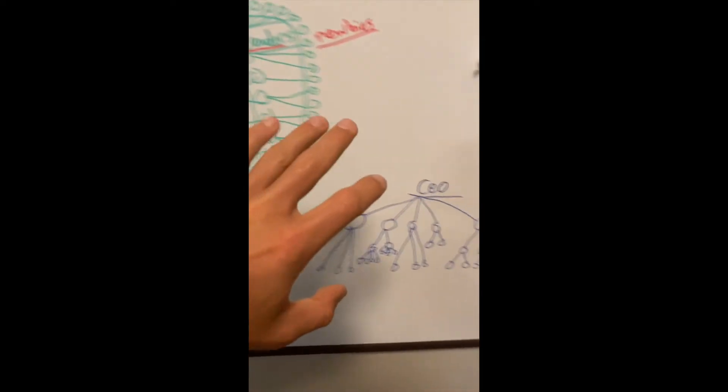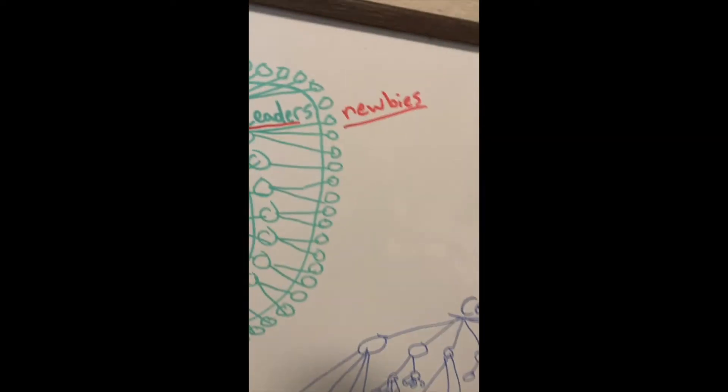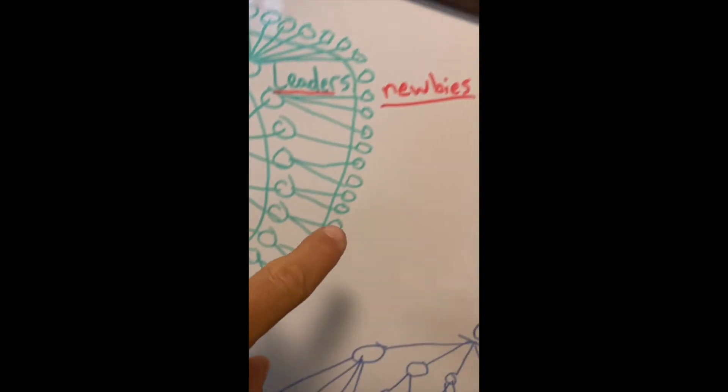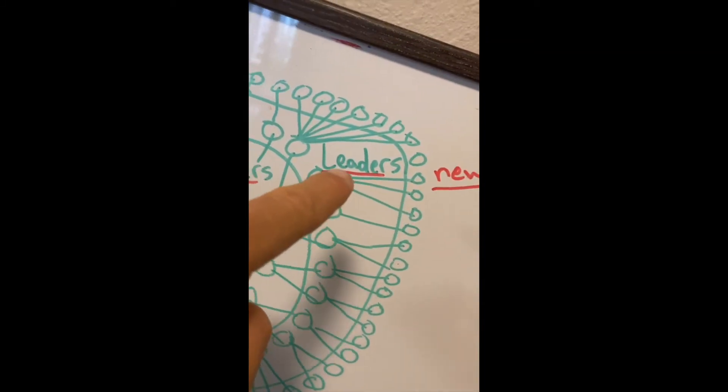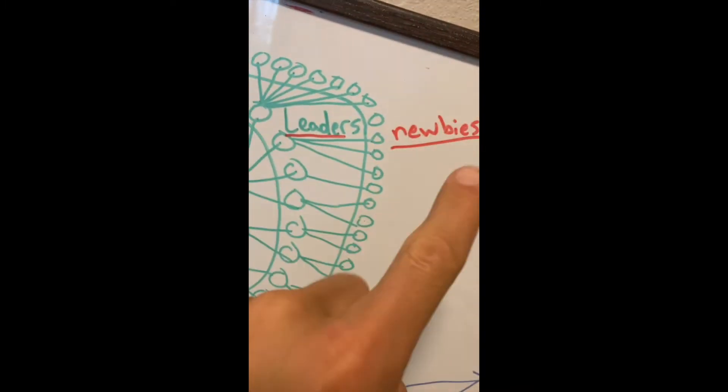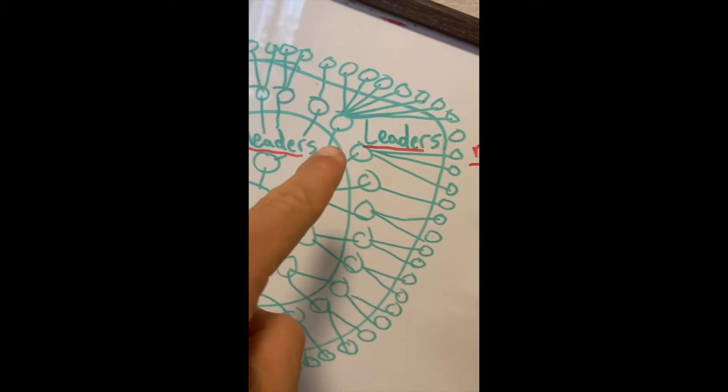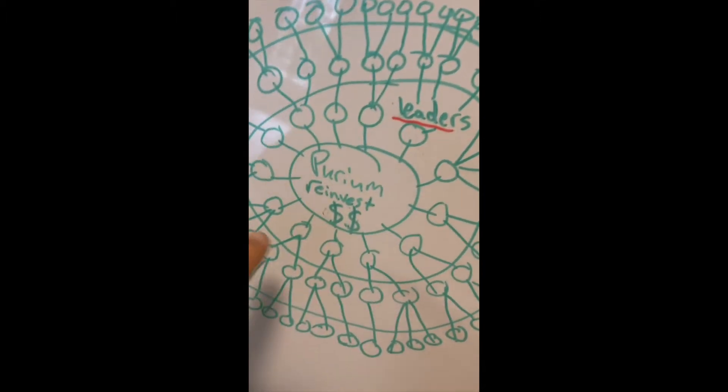Let's take a look at the Purium business model versus a standard business model. As you'll see, there's a lot of newbies. They're new to the business and they're taught by leaders all around. They have the opportunity to step into the next ring, which is then led by more leaders.